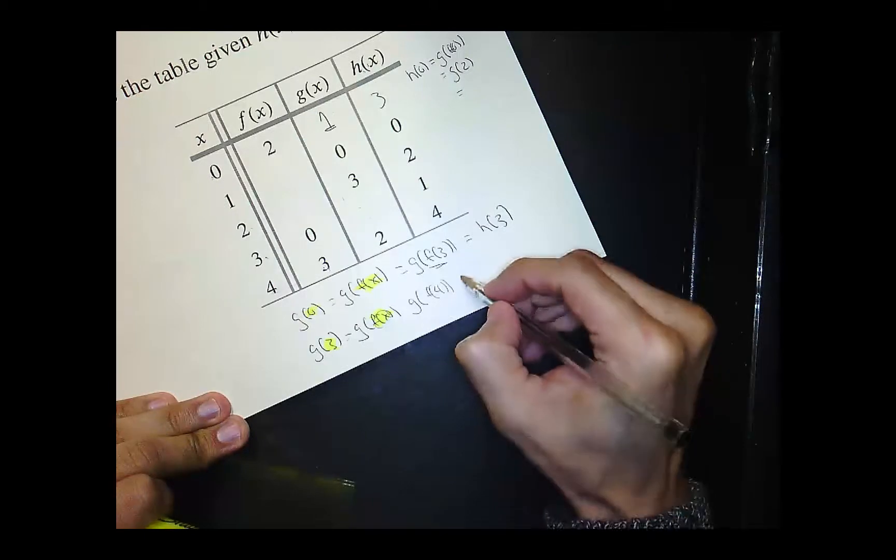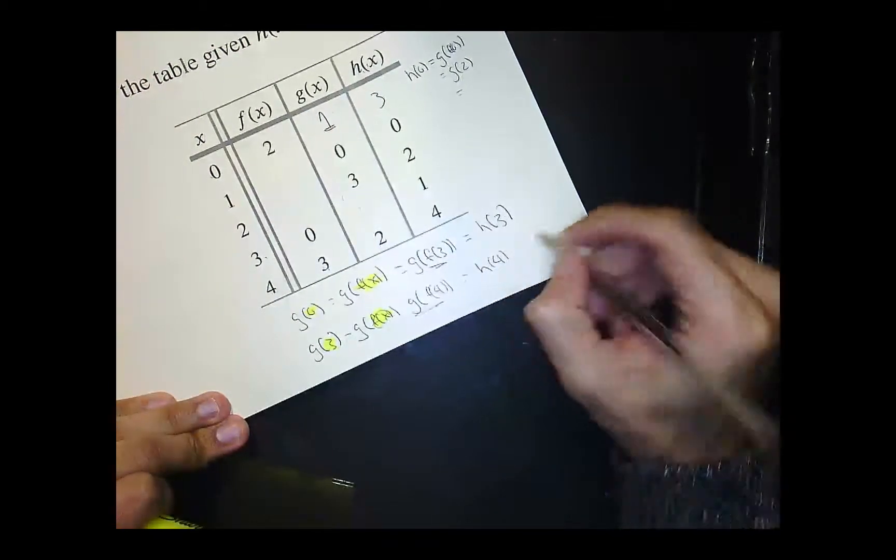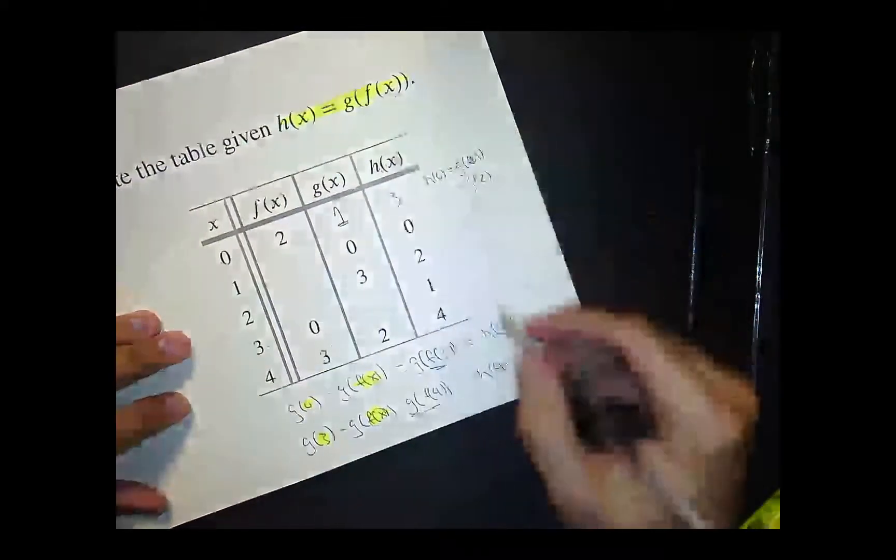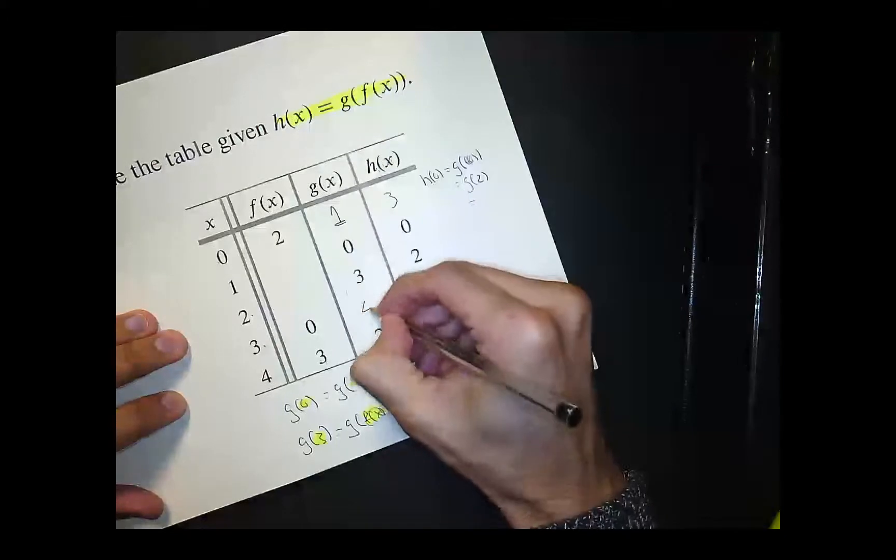And then this is like saying h of 4, right? Because the function h, you could see from up here, right? The function h is the composition, right? It's f inside g. Well, what is h of 4? h of 4 is 4. So that means this is 4.